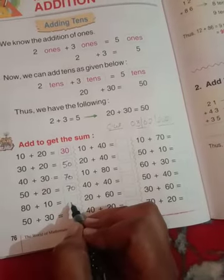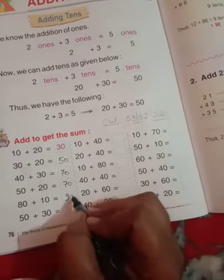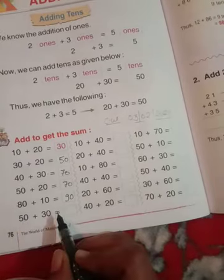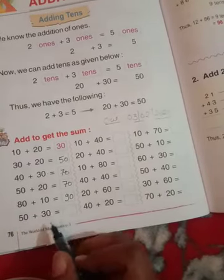Thirty plus thirty equals? Ninety. Fifty plus thirty equals? Eighty. Understand?